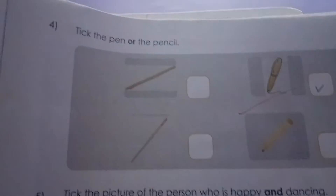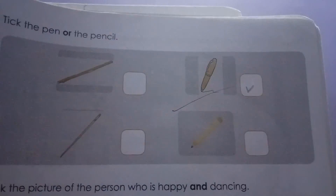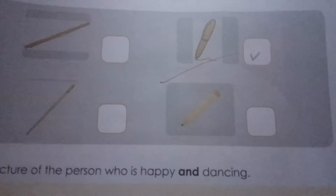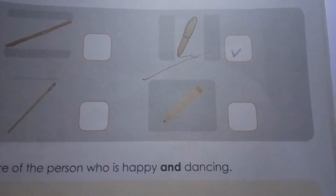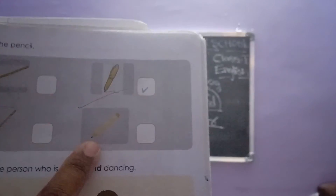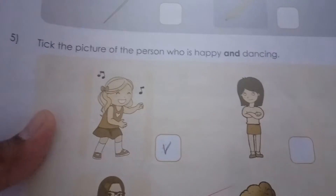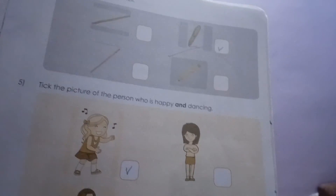Next one: tick the pen or pencil. You have to tick the pen or pencil. This is the pencil and this is a pen. You have to tick only one — 'or' means you have a choice. Next one: tick the picture of the person who is happy and dancing. She is happy and she is dancing, so tick the girl.